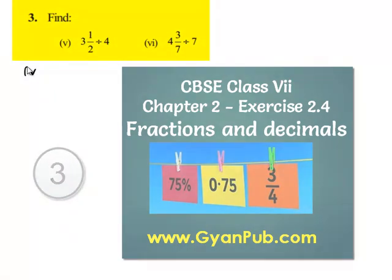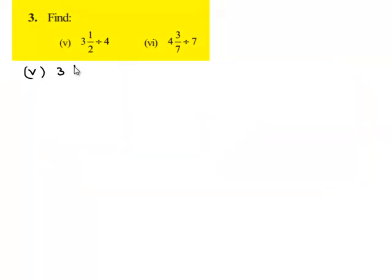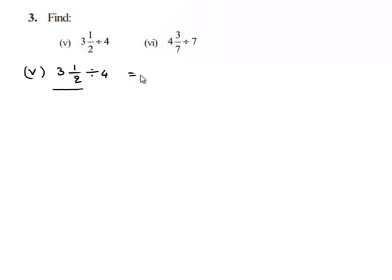Take down the fifth problem: 3 and 1/2 divided by 4. Here 3 and 1/2 is a mixed fraction, so we have to convert this into an improper fraction and then we have to divide.